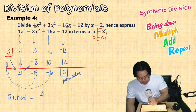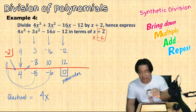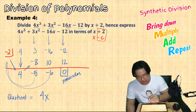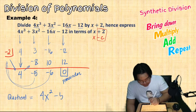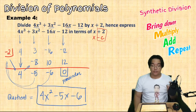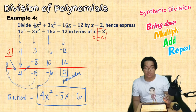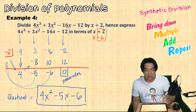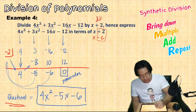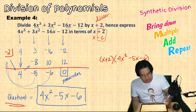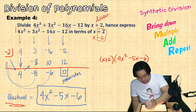The quotient is one degree lower than the dividend — since the dividend is cubic, the quotient is quadratic: 4x squared minus 5x minus 6. Since we're asked to express 4x cubed plus 3x squared minus 16x minus 12 in terms of x plus 2, we multiply the quotient by the divisor: x plus 2 times 4x squared minus 5x minus 6, which equals the original dividend.